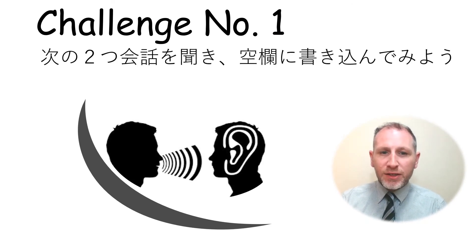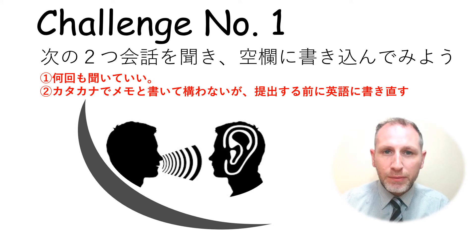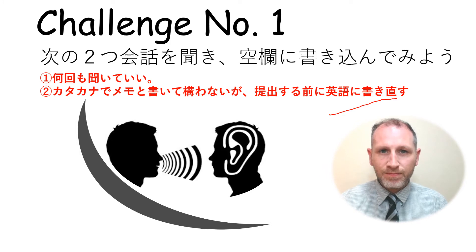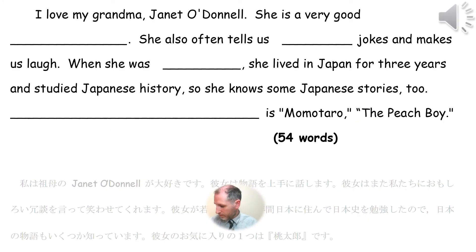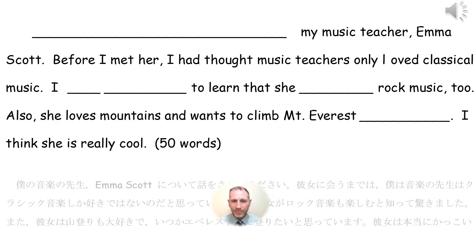Challenge number one: listen to the two conversations and fill in the blanks. You can listen as many times as you want. You can write your memo in katakana, but before you submit, please re-write everything into English. First: 'I love my grandma, Janet O'Donnell. She is a very good storyteller. She also often tells us funny jokes and makes us laugh. When she was young, she lived in Japan for three years and studied Japanese history, so she knows some Japanese stories too. One of her favourites is Momotaro, the Peach Boy.' Second: 'Let me talk about my music teacher, Emma Scott. Before I met her, I had thought music teachers only loved classical music. I was surprised to learn that she enjoys rock music too. Also, she loves mountains and wants to climb Mount Everest someday. I think she is really cool.'